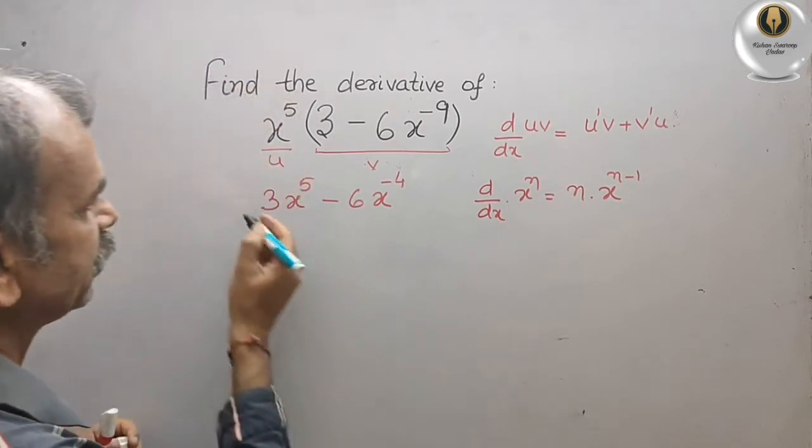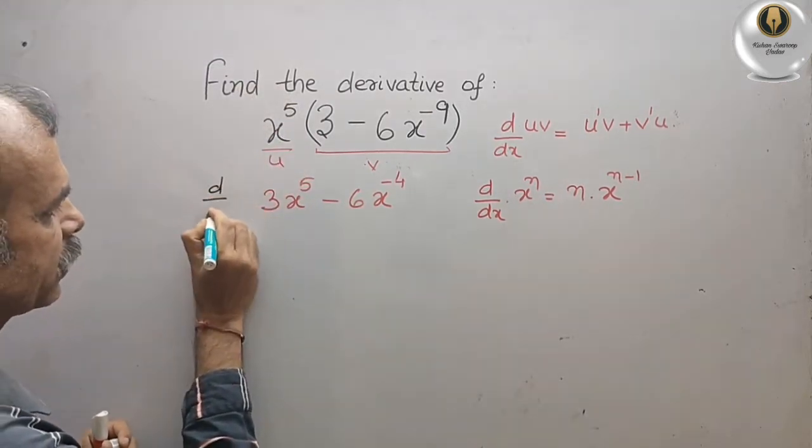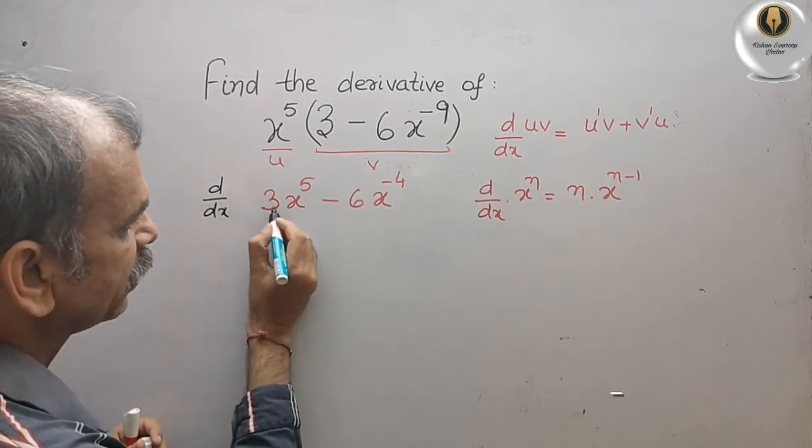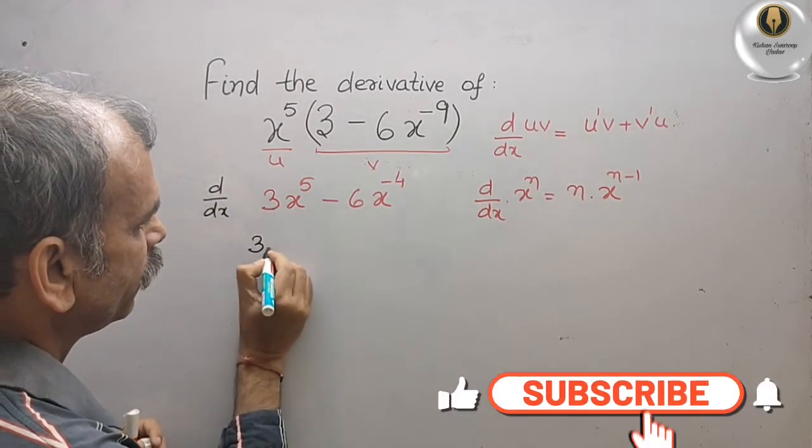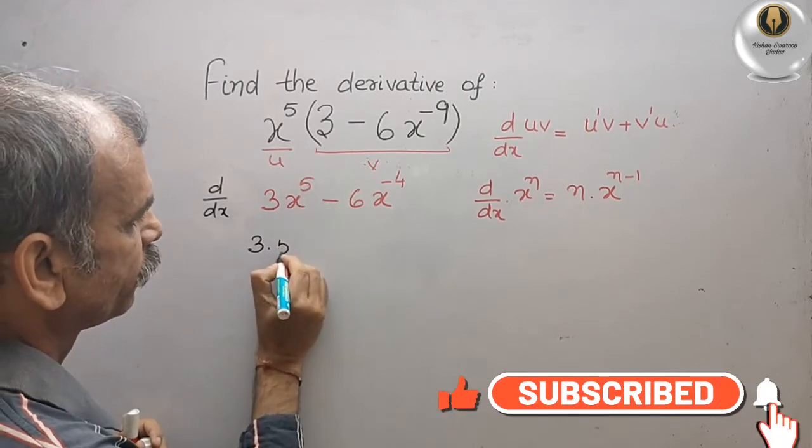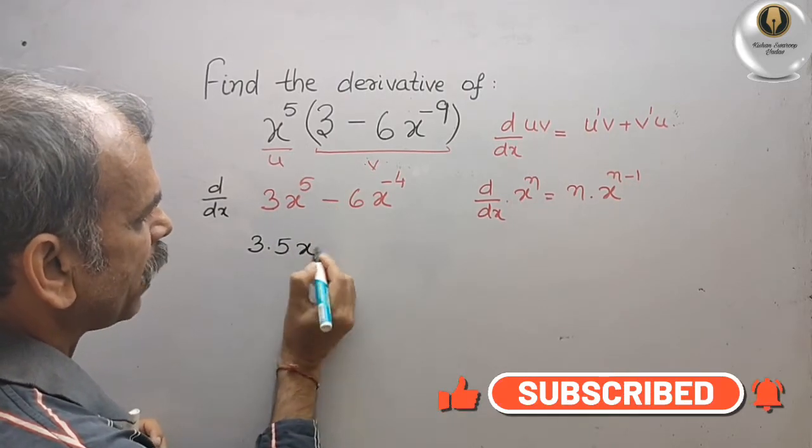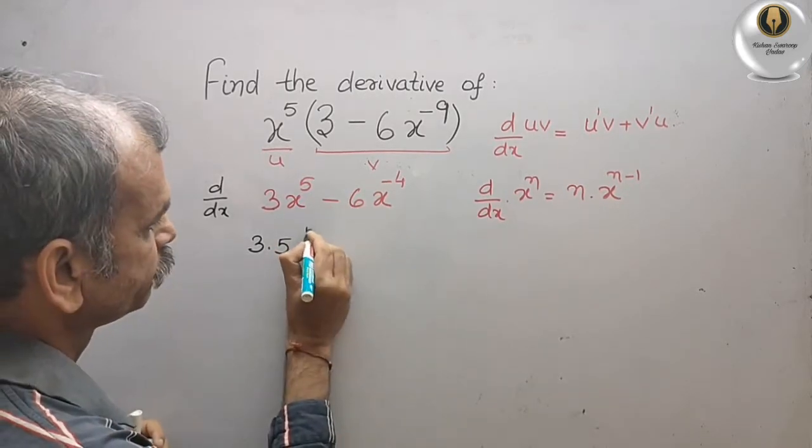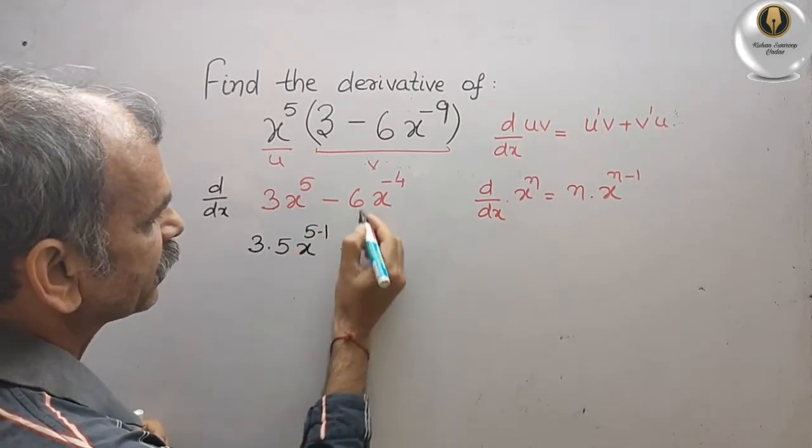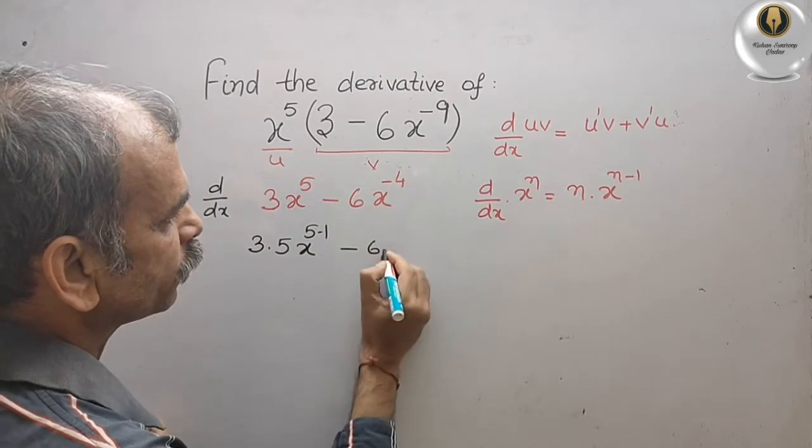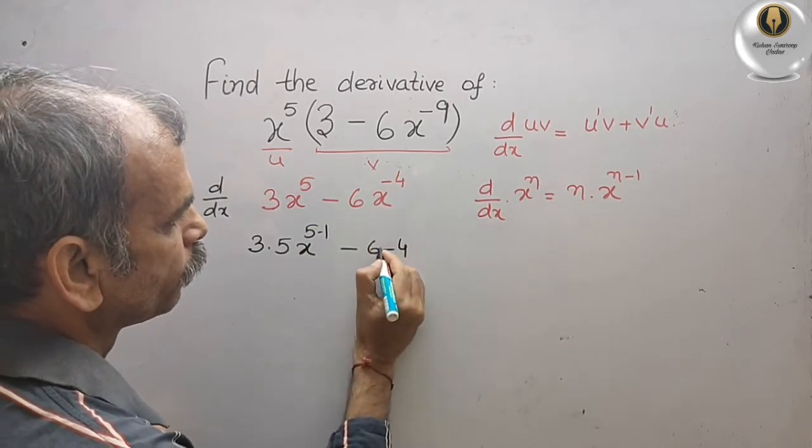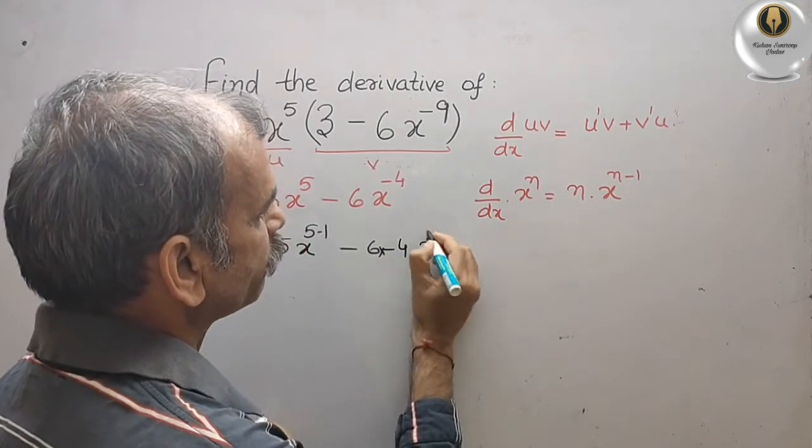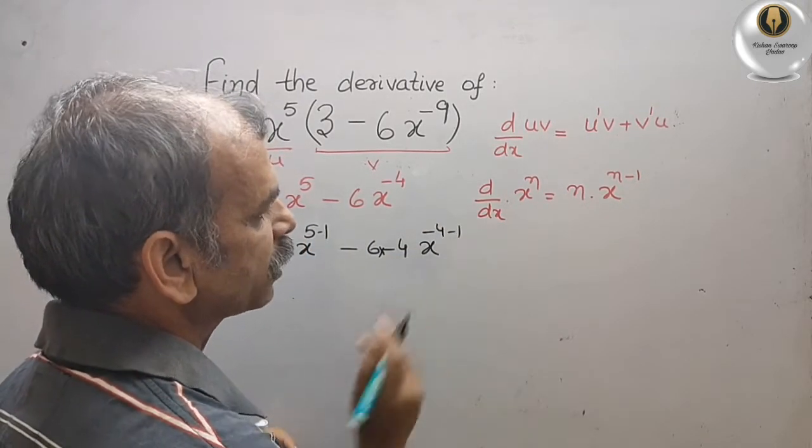What we will get? This is your d by dx. That is equal to 3 into 5, x to the power of n minus 1 means 5 minus 1. Minus 6 minus 4. Minus 6 into minus 4, x to the power of minus 4 minus 1.